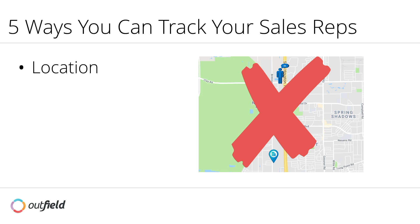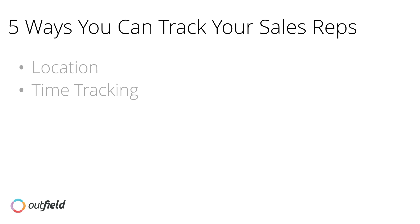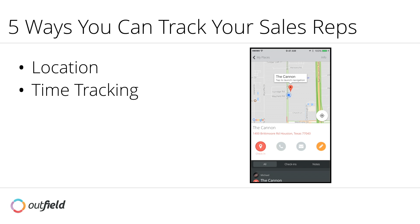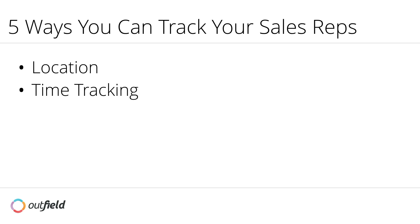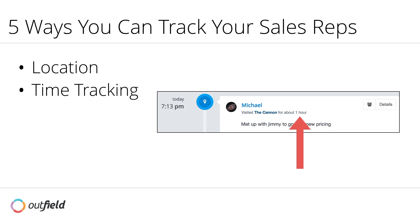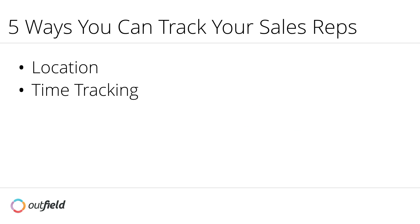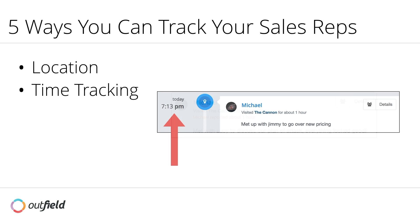The second method you can use to track your sales reps is with the old-fashioned timestamp. When a rep checks into a location, a timer begins and doesn't end until the rep checks out. In this example, we can see that our rep was visiting with a customer for just under an hour — no more, no less. Here is the time and date stamp and here is the duration of the visit.